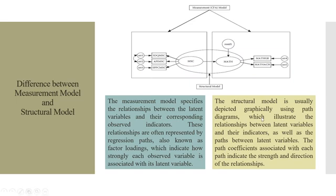Now let's talk about the structural model. So when I am specifying the relationship between construct to construct, and this is the residual error of the model, this is known as a structural model. The structural model is usually depicted graphically using the path diagrams which illustrate the relationship between the latent variables and their indicators. So this is the relationship between the latent variables. The path coefficients associated with each path indicate the strength and direction of the relationship.